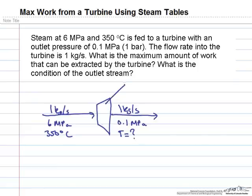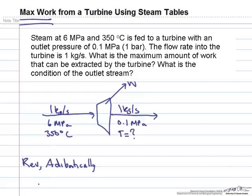In the turbine we're extracting some amount of work. The key thing about this problem is that the maximum amount of work extractable from a turbine is when it is operated reversibly and adiabatically, and that happens when delta S is equal to 0. So we need to take both enthalpy and entropy values from the steam tables.